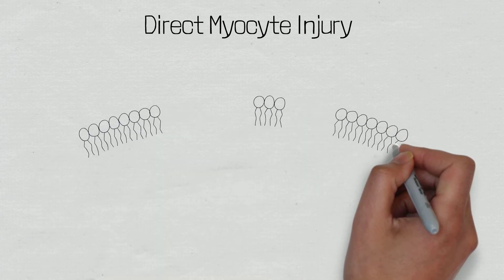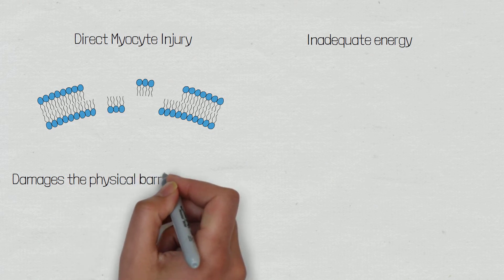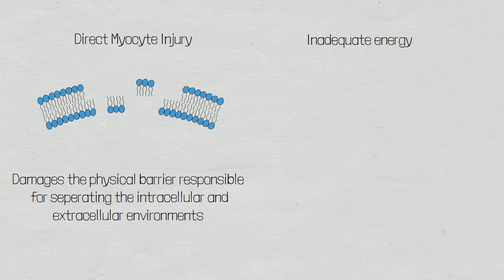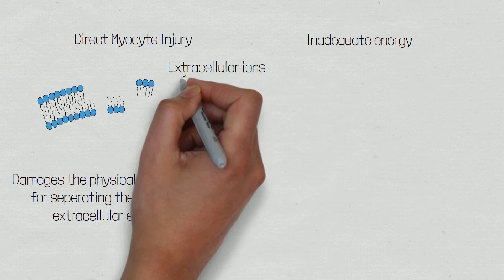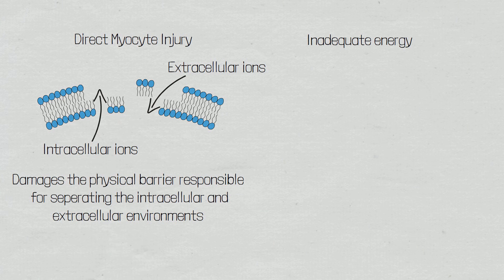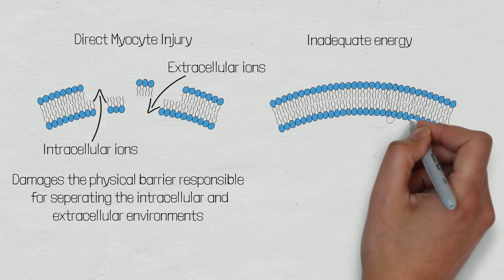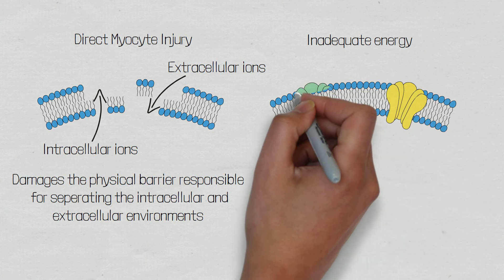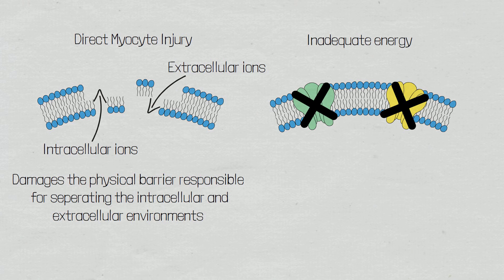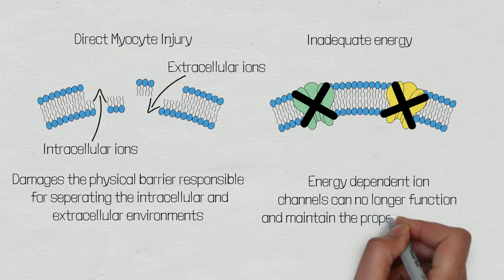Direct myocyte injury damages the sarcolemma — the muscle cell wall — which in normal physiology provides a physical barrier between the intracellular and extracellular contents. A disruption to this barrier will cause a disruption to the proper balance of intracellular and extracellular electrolyte and fluid concentrations, as there will be no barrier stopping these ions from moving down their concentration gradients. Any insult that damages the ion channels through direct myocyte injury, or that reduces the availability of ATP, will cause a disruption in ionic balance as the pumps will no longer function.